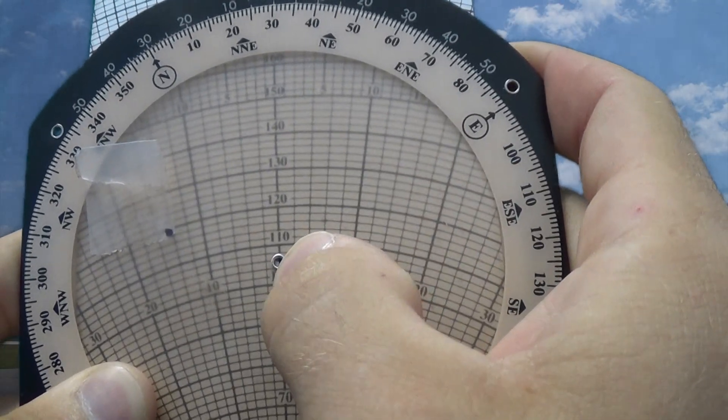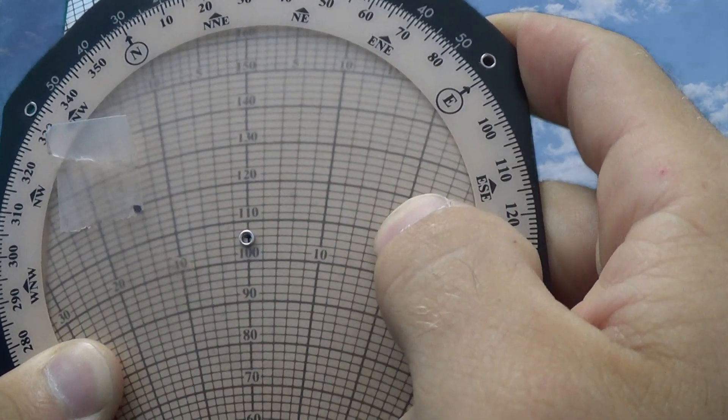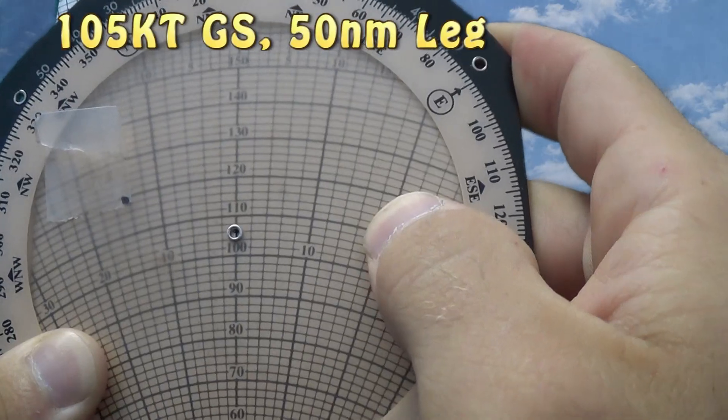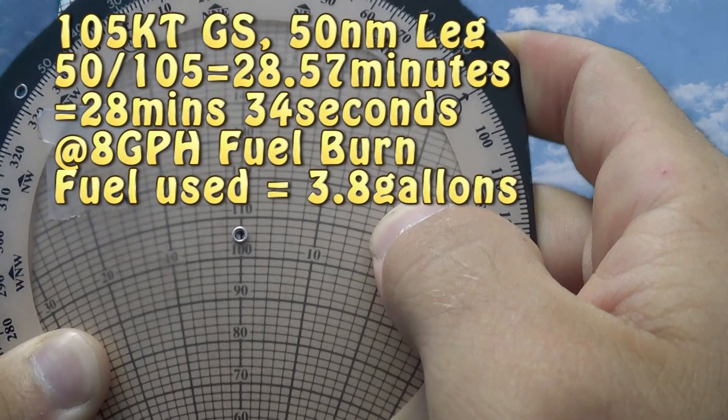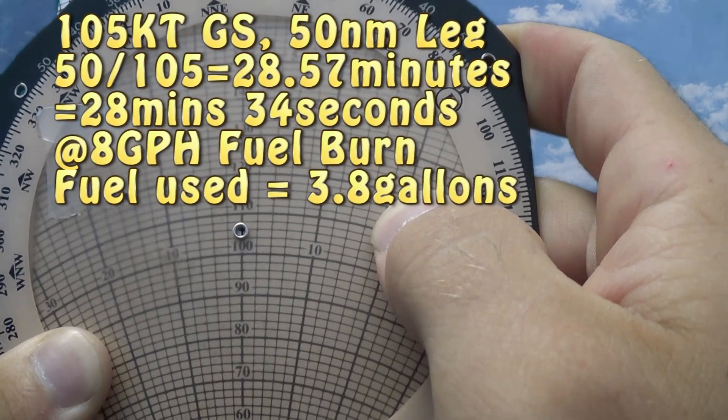And again, using the 105 knots ground speed, based on, we'll just say it's a 50 mile trip, to calculate what our estimated time and route is going to be, and our fuel burn at, say, eight gallons per hour. And of course, the fuel burn comes from our cruise performance charts.